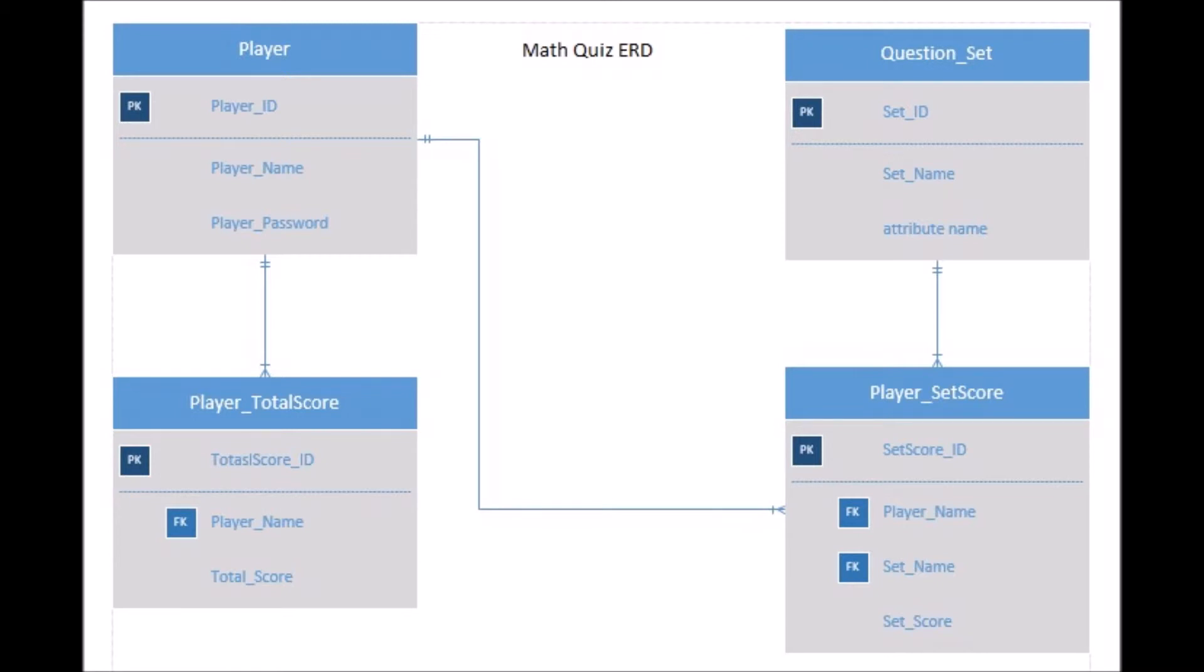The score is keyed in into the player set score that consists of set score ID as primary key, player name that is referenced to the player's player name, set name that is referenced to question sets set name, and set score.